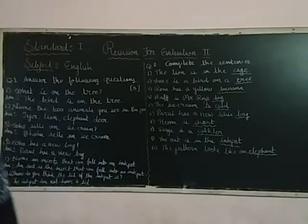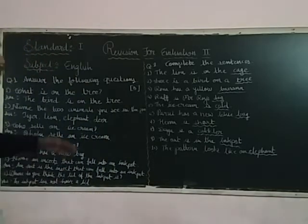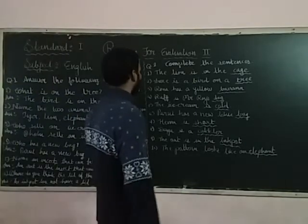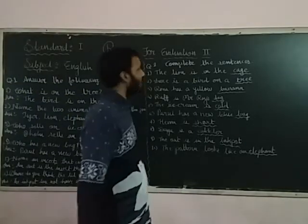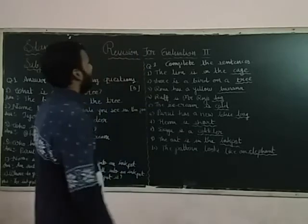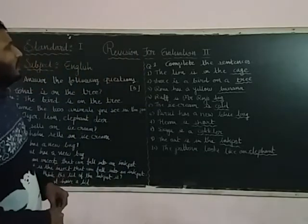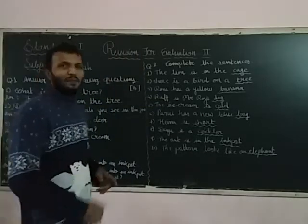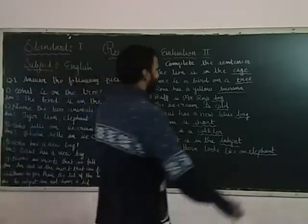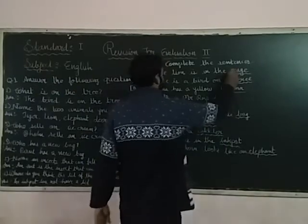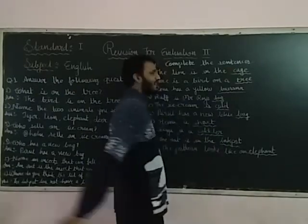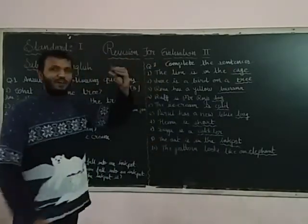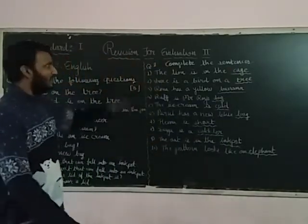Question number 2: Complete the sentences. First number: The lion is in the blank — his cage. Answer is: cage. It will be for 5 marks. The lion is in the cage.